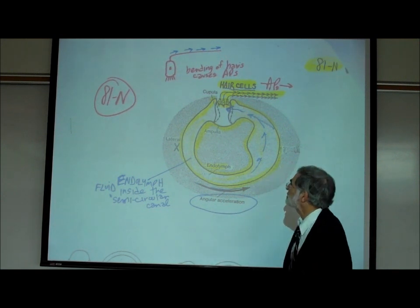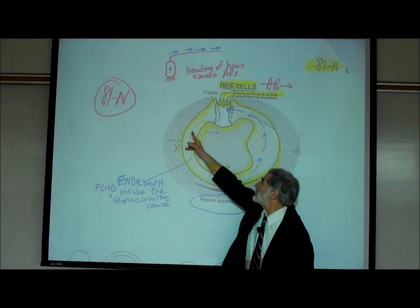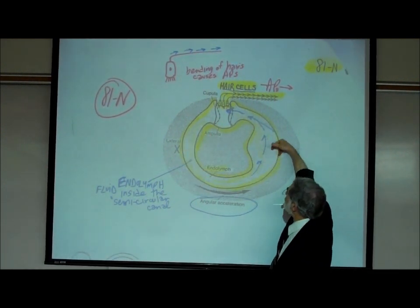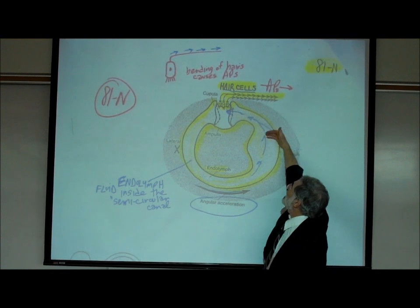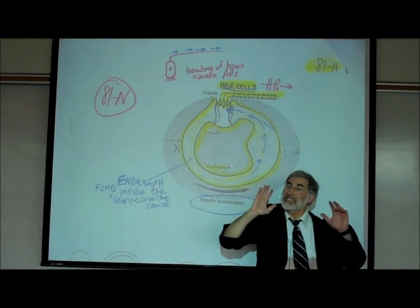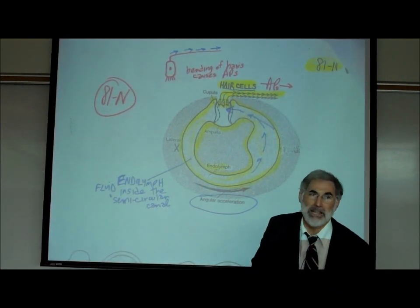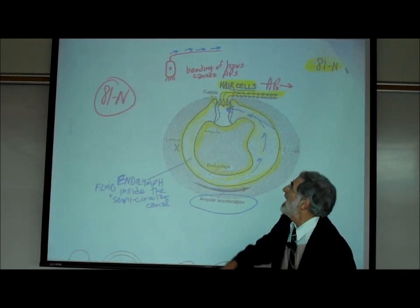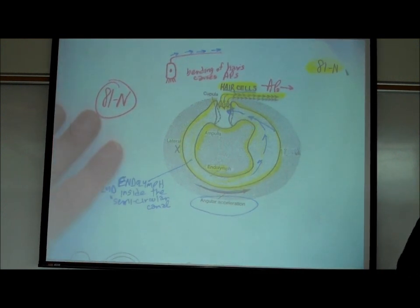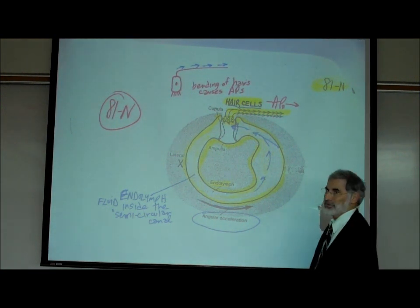They're sensory neurons that have little hairs — cilia. Whenever the fluid starts to move, if fluid starts to flow in this canal, it bends those little hairs, just like sound waves. Fluid waves in the cochlea bend the little hairs, and that activates them to send action potentials to your brain. Bending of the hairs causes action potentials.